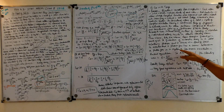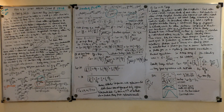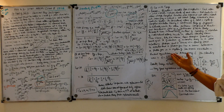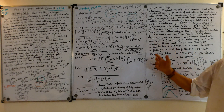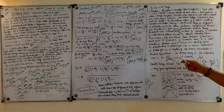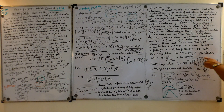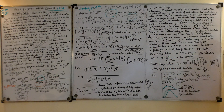Debye assumed that a phonon gas has the same behavior as a photon gas. For a system of harmonic oscillators in thermal equilibrium, they act as a bunch of phonons, and these phonons behave similarly to photons. Since photons are bosons, he used Bose-Einstein statistics, so the average energy per standing wave is hν / (e^(hν/kT) − 1).